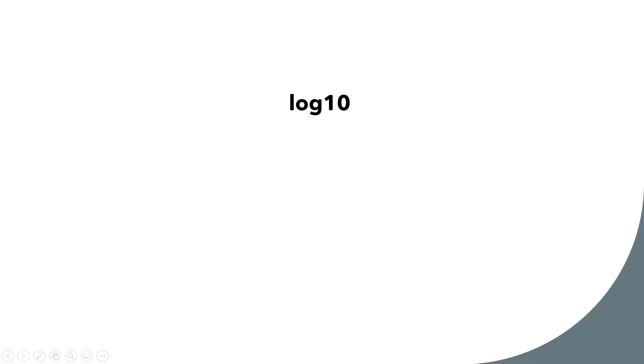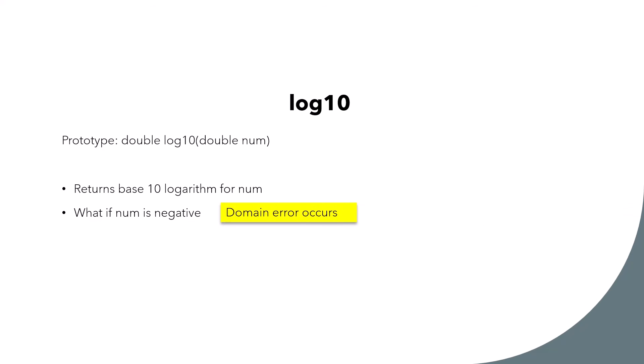Now we come to log10. This function returns a double and takes a double as argument. It returns a base-10 logarithm for the argument number. If the number is negative, a domain error will occur. If the argument is 0, a range error occurs.